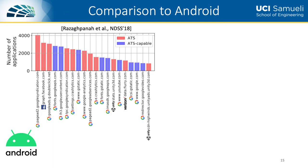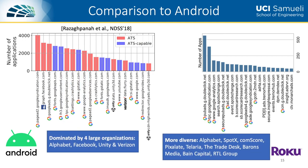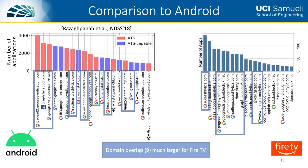We also compare the top 20 third-party ATS domains of the two platforms to those of Android, to better understand similarities and differences of advertising and tracking on Smart TVs versus the mobile platform. For Roku, we observe very little overlap — only two out of the top 20 domains. We note that while Android is dominated by four major organizations, the Roku top 20 includes a much more diverse set including smaller organizations such as Pixelate and Teleria. For Fire TV, the story is quite different: we see an overlap of nine domains, most pertaining to Alphabet or Google. This makes sense, as Fire TV's operating system is built from Android, meaning native Android ATS libraries work out of the box on Fire TV.